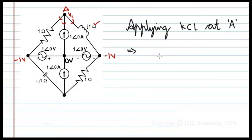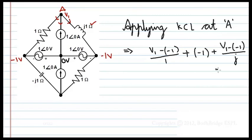First, the current through resistor: V1 minus minus 1 by 1, plus the current coming from the source is 1. Therefore, leaving is minus 1. Plus, current leaving through the inductor is V1 minus minus 1 by j equals 0. Therefore, V1 plus 1 minus 1 minus j into V1 plus 1 equal to 0.